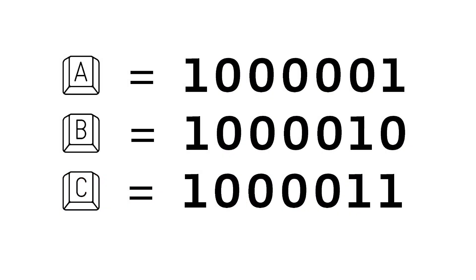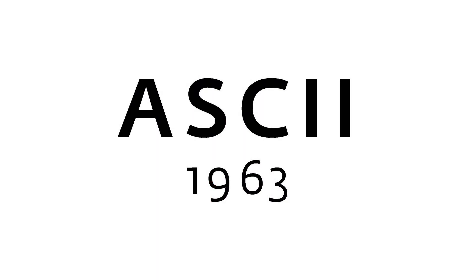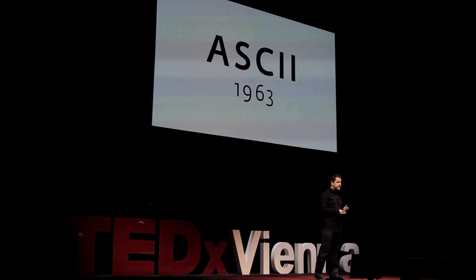Well, we all know computers don't speak German, they don't speak English, they know nothing about Chinese — they only know binary digits. So basically when you send a text message or an email, you send a short string of binary digits. It's seven bits in this case. This is the basis of encodings, and the most famous one is ASCII — American Standard for Coded Information Interchange.